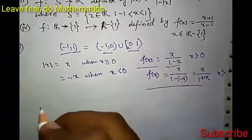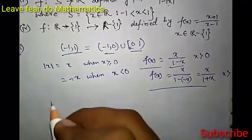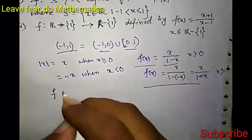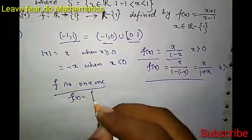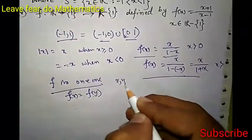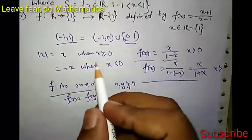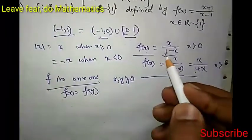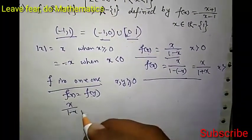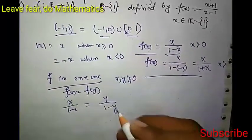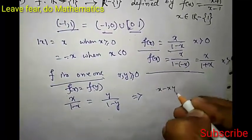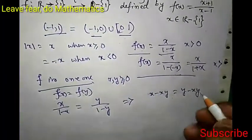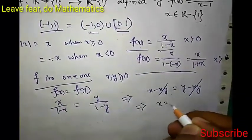Now we have to show that f is one-one. To do that, we show that if f(x) = f(y), then x = y. Take x and y both greater than or equal to 0. Then f(x) = x over (1 minus x) and f(y) = y over (1 minus y). Simplifying, we get x minus xy = y minus xy, so minus xy cancels from both sides, giving x = y. Case 1 is proved.